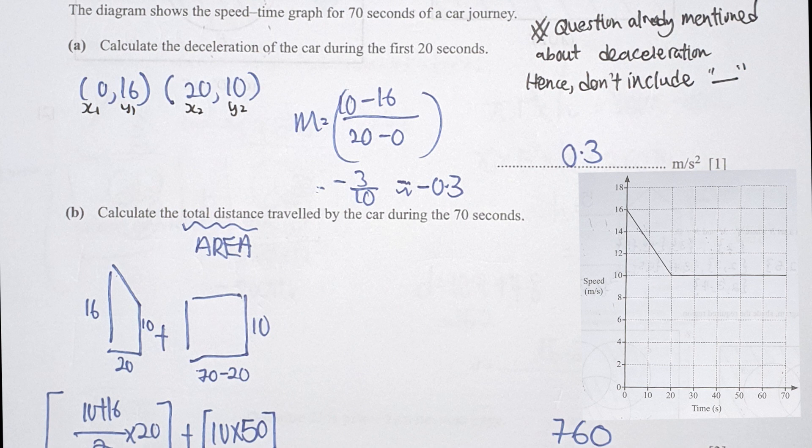For section b, the total distance for the car during the first 70 seconds. This one is referring to the area of this particular shape. I basically split this into a trapezium and a rectangle. Alternatively, you can split it into one big rectangle with a triangle. After the calculation, you should get 760 as your final result.